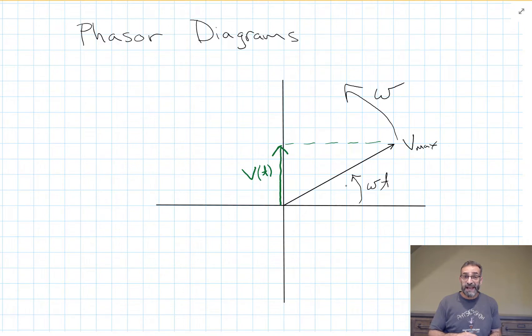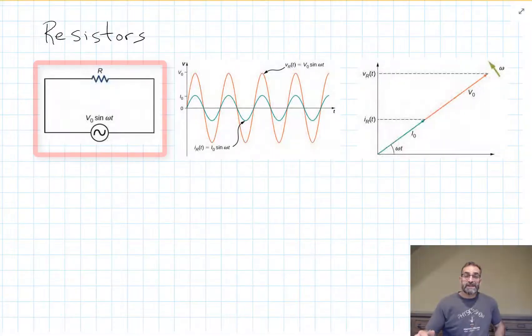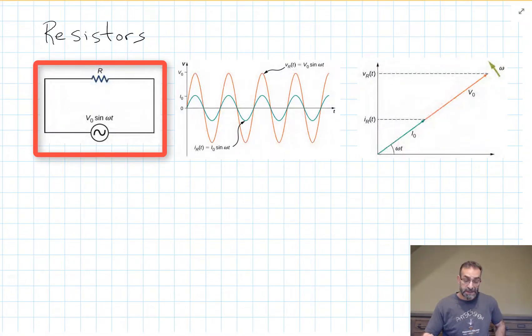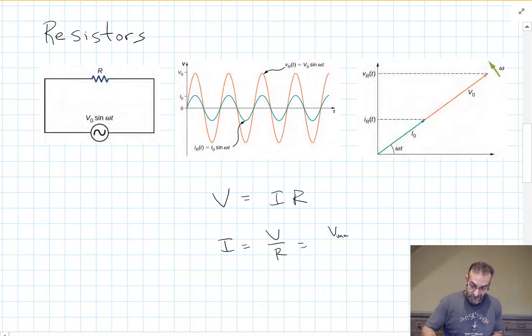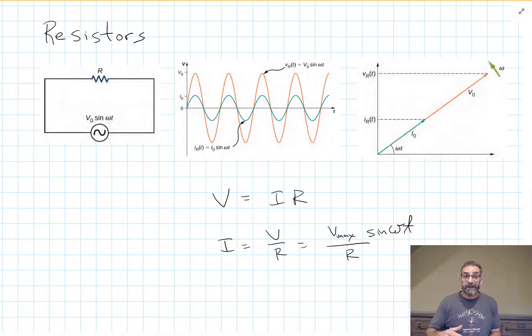So let's take a closer look at resistors, capacitors and inductors in AC circuits. Here's our simple circuit with an AC power source and a resistor. And we know that V is equal to IR for a resistive device. And if we just solve for the current, we get it's proportional to the voltage being supplied to the resistor. The current is directly proportional to the voltage. When the voltage hits its maximum value, the current also hits its maximum value. When the voltage is zero, the current is zero.